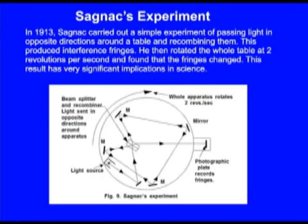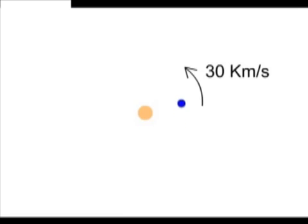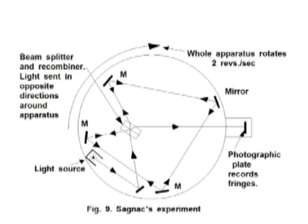Sagnac carried out a simple experiment of passing light in opposite directions around a table and recombining them. This produced interference fringes. He then rotated the whole table at two revolutions per second and found that the fringes changed. This result has very significant implications in science. It proved that the ether existed.